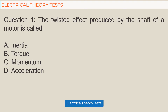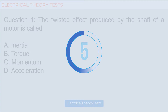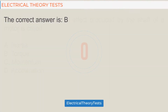Question 1: The twisted effect produced by the shaft of a motor is called — a) inertia, b) torque, c) momentum, d) acceleration. The correct answer is b) torque.